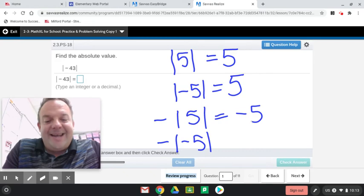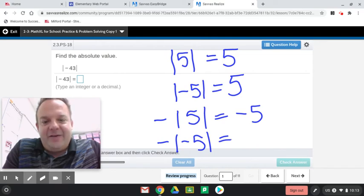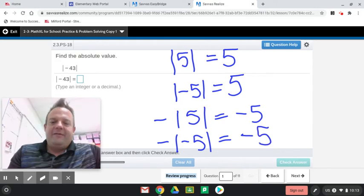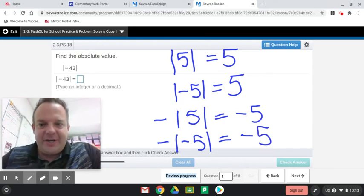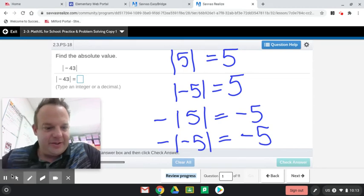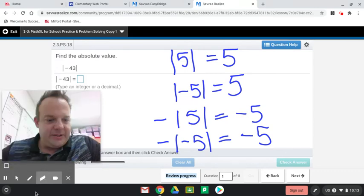This next one says negative absolute value of negative 5. Well, what that means is the opposite of the absolute value of negative 5. So, first you do the absolute value of negative 5 is 5, and then the opposite of that with the sign on the outside makes it negative 5 here. If you memorize that and just put any number in, that will tell you how this works. All right, let's get on with the lesson. So, here we go, on with the lesson.